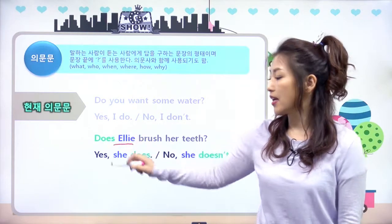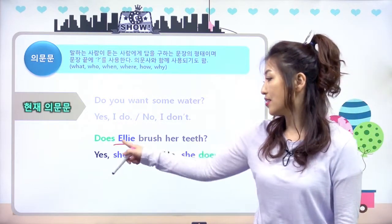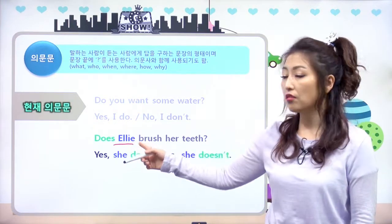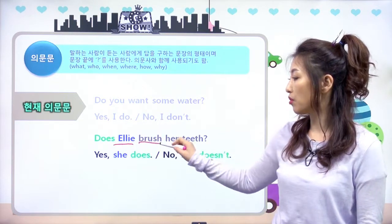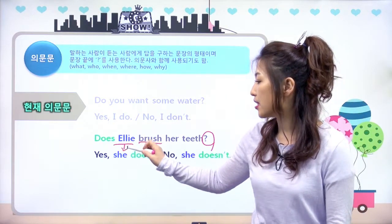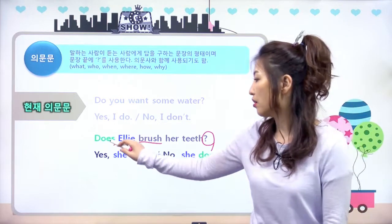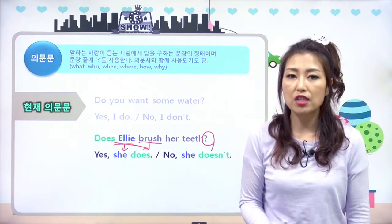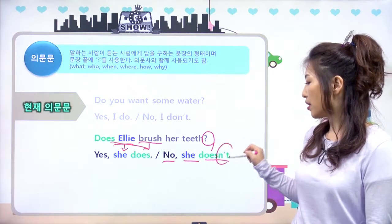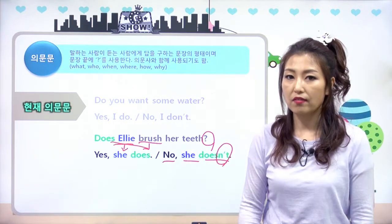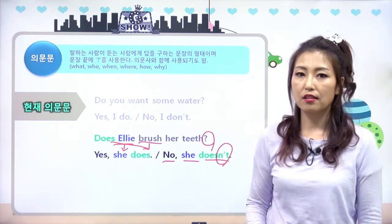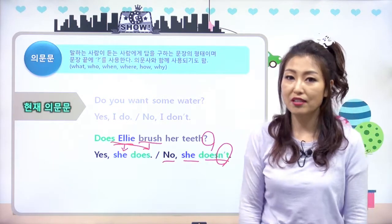'Does Ellie brush her teeth?' Ellie는 3인칭 단수니까 does 왔고, does + 주어 + 동사 원형 + question mark로 의문을 만들었어요. 답은 Ellie는 여자아이니까 she를 쓰고, 'Yes, she does. No, she doesn't.' no는 not과 함께, yes는 그냥 does만. 답할 때는 주로 대명사를 많이 사용하면 답도 금방 할 수 있어요.